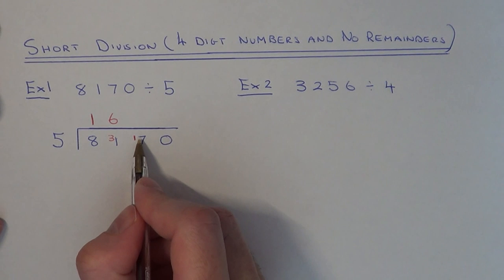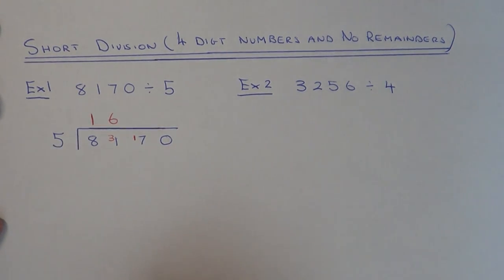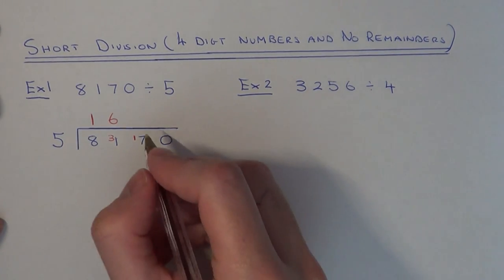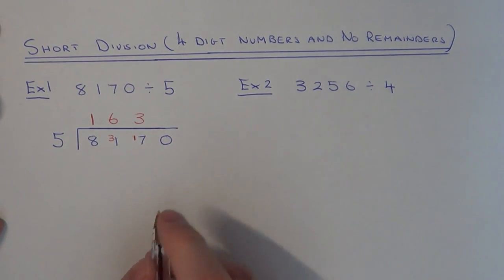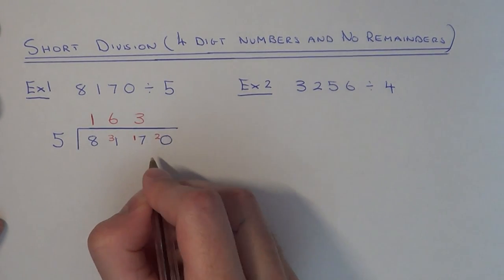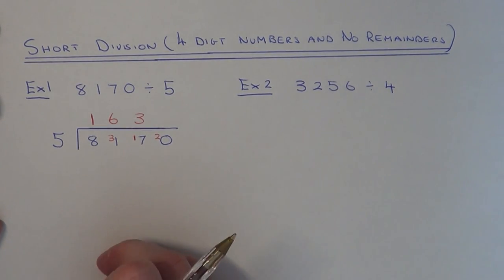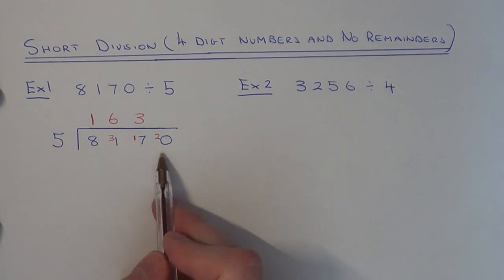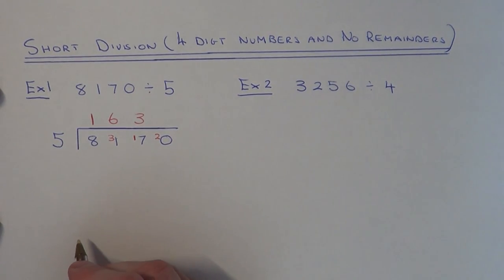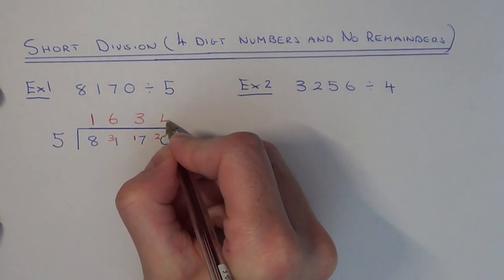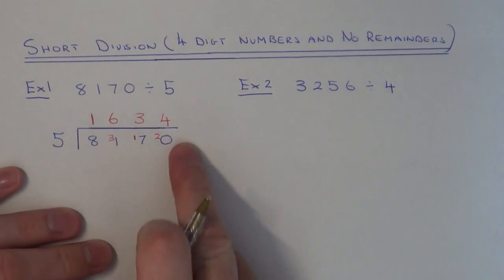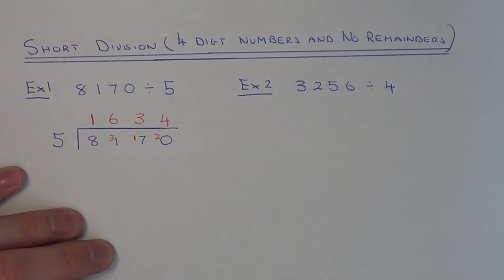Next you do 17 divided by 5. This goes 3 times with a remainder of 2. Again, put this by the next number. Finally you do 20 divided by 5, and this goes 4 times. So our answer is 1634.